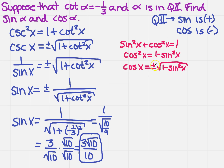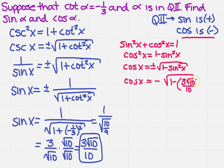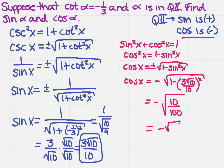Do we need the plus or the minus? We look back at our quadrant rules — cosine is going to be negative in quadrant 2. So cosine of x equals negative the square root of 1 minus sine squared x. Plugging in sine = 3√10 over 10 and squaring it, when I simplify I get negative the square root of 10 over 100, which reduces to negative √10 over 10. So that's your value for cosine of alpha.